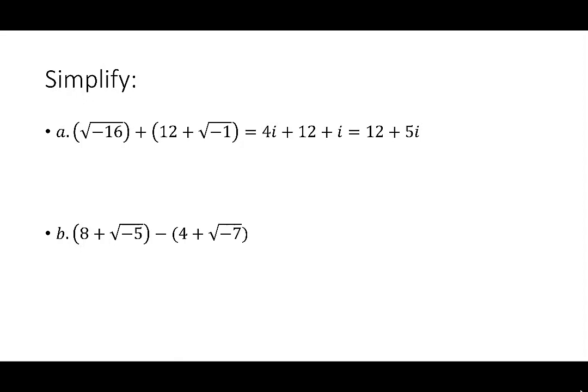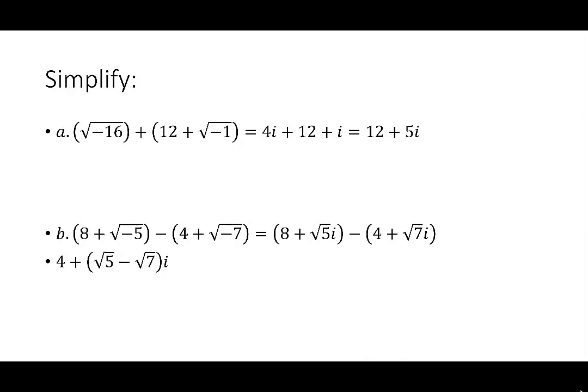My last problem says 8 plus the square root of negative 5 minus 4 plus the square root of negative 7. Once again, I'm going to rewrite the numbers in standard form. 8 plus the square root of negative 5 becomes 8 plus the square root of 5 times i. Then I'm going to subtract 4 plus the square root of 7 times i. Putting the real parts together, I have 8 minus 4 is 4. Now let's talk about the square root of 5i minus the square root of 7i. Square root of 5 and square root of 7 don't match. The part they have in common is that they're both the imaginary part of the numbers, so what we're going to do is put together the square root of 5 minus the square root of 7 and then have the i on the outside. My simplified sum is 4 plus the quantity square root of 5 minus square root of 7 times i.